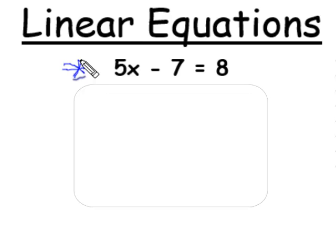We'd like to solve this equation, which means find an x that will make the equation true. That is, the number on the left-hand side, 5x minus 7, should be equal to the number on the right-hand side, 8.